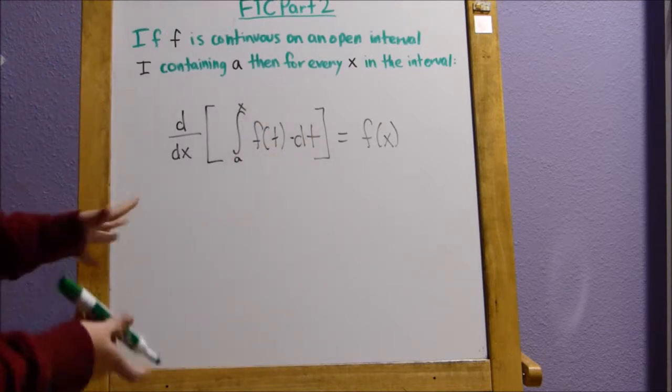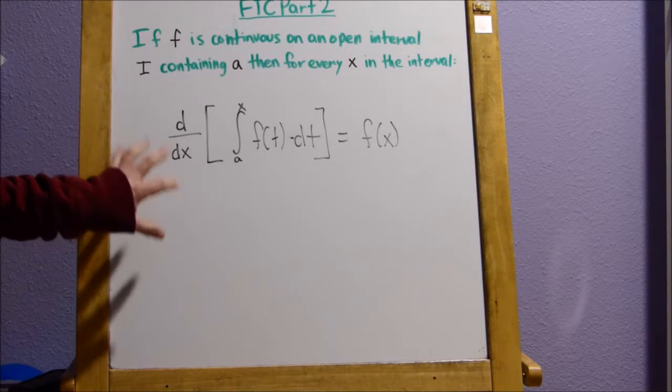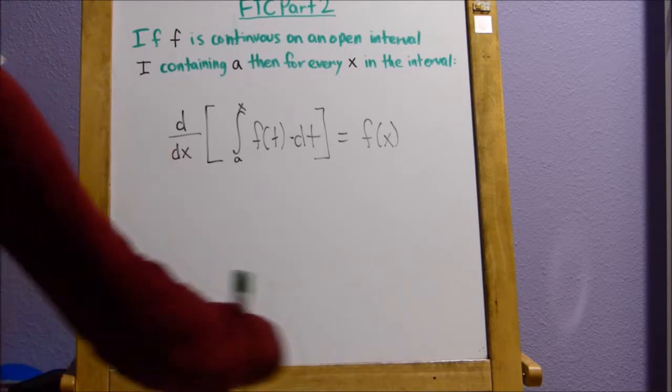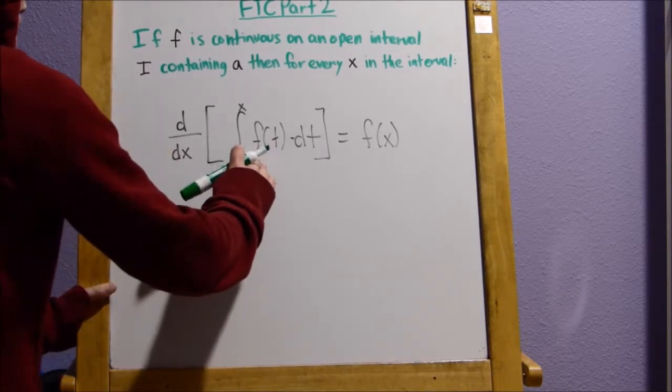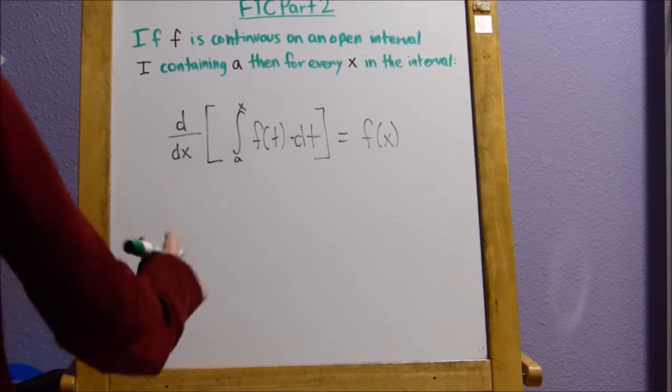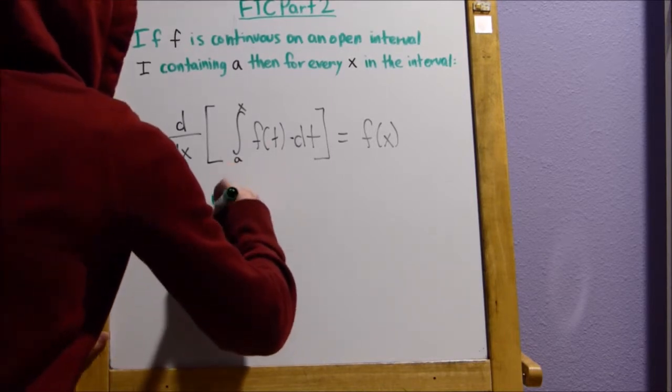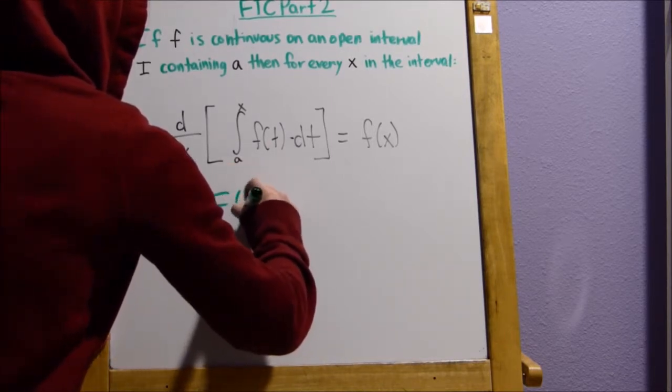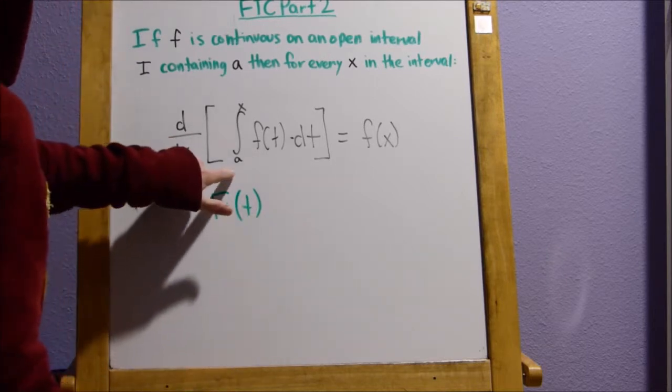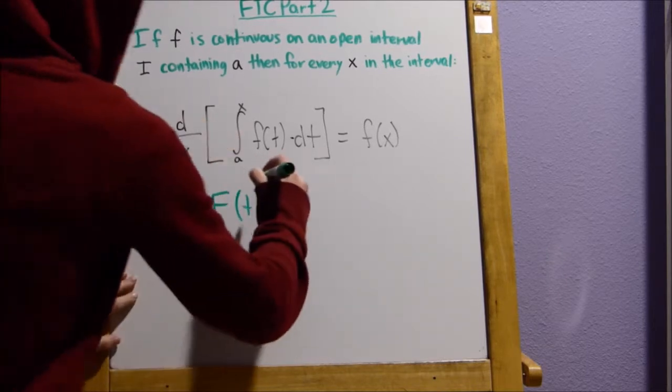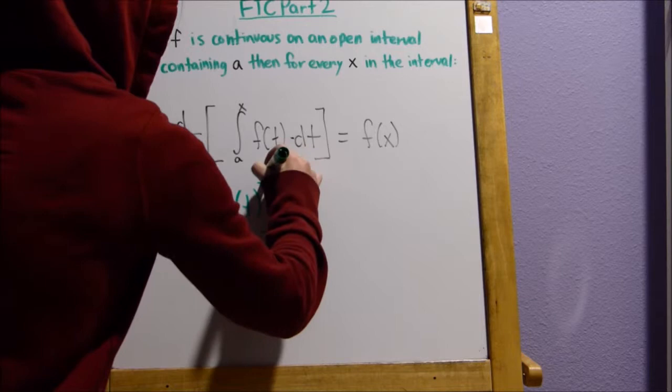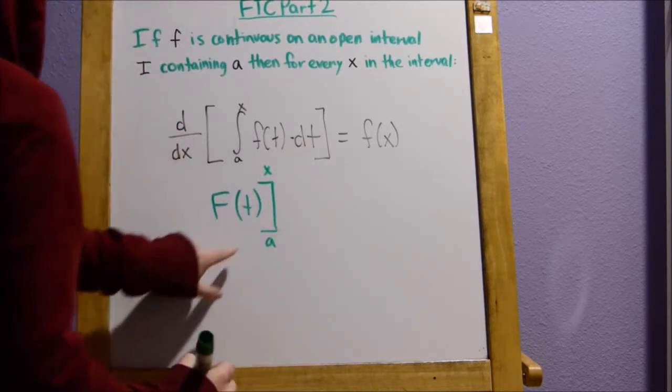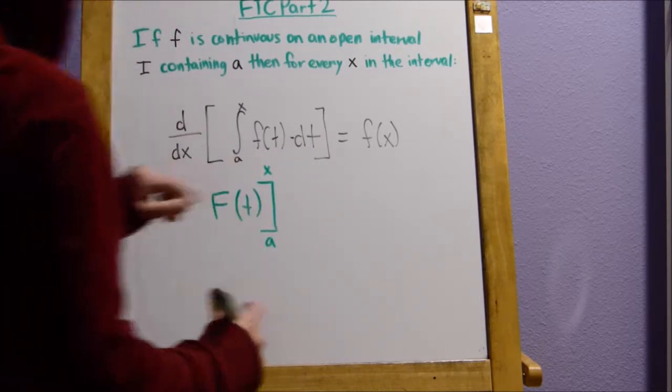So to prove this, we can use FTC Part 1. So we're going to take the derivative of f of t. So the derivative of f of t, we're going to call capital F of t. Now, the interval is going from a to x, so we make our little bounce, f of t from a to x.